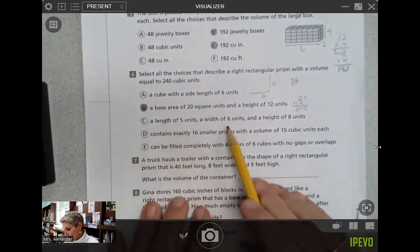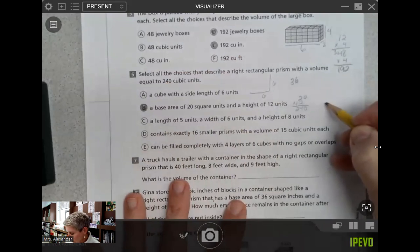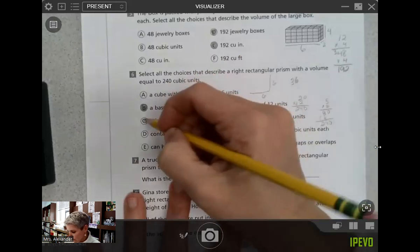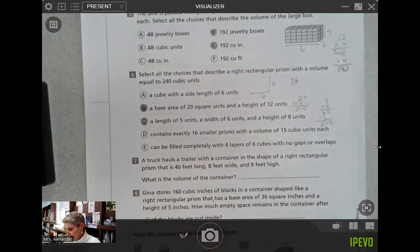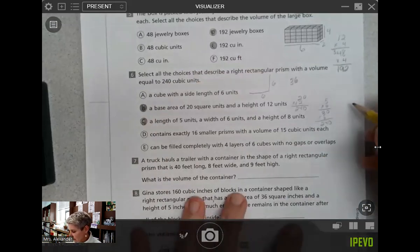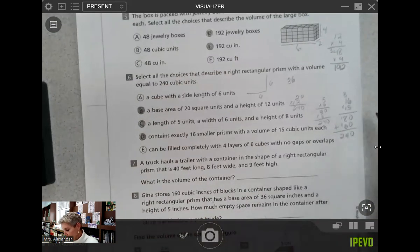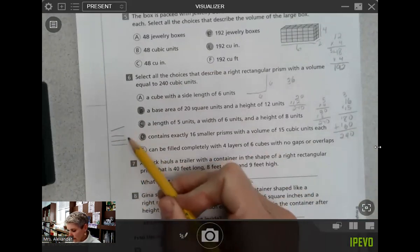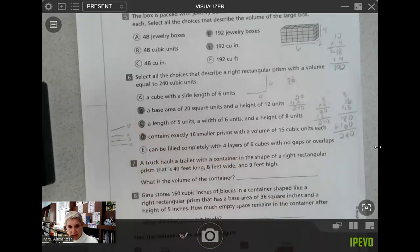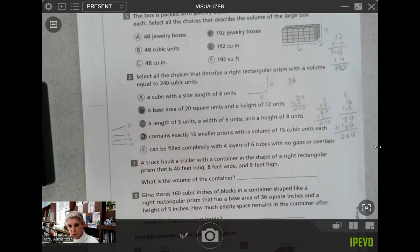A length of five units, a width of six units, and a height of eight units. So that gives us our length and width and height. Five times six equals 30, 30 times eight is going to give us that 240. Contains exactly 16 smaller prisms with a volume of 15 cubic units each. If I do 16 times 15, I get 240. Can be filled completely with four layers of six cubes, no gaps or overlaps. So I have four layers and these are six cubes each, no gaps or overlaps. That only gives me 24. So I'm going with B, C, and D.